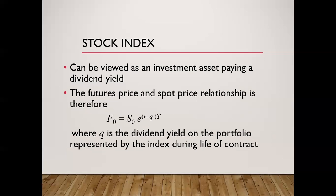Here's a stock index example. You'll notice this looks a lot like the equation where there was fixed income coming off your investment. If it was a fixed dollar amount, we put (S sub zero minus I) in parentheses; when it was a percentage, we said (R minus Q) in parentheses. Here, Q is the dividend yield — that's income, the dividends that would be paid out, written as a yield, so it's a percentage. So for stock indices it would be R minus Q.